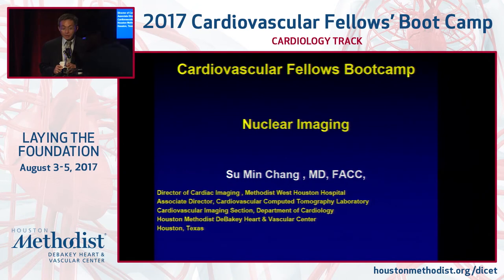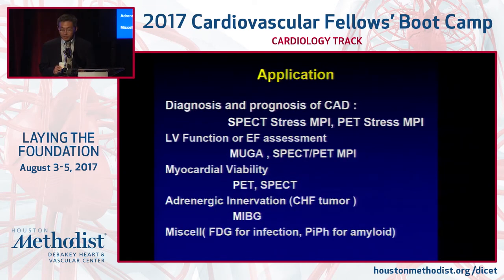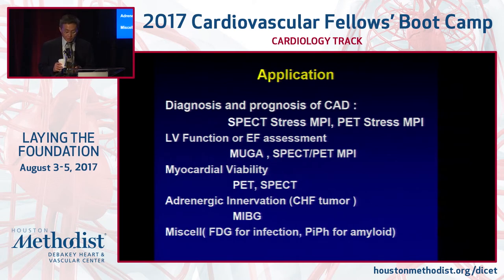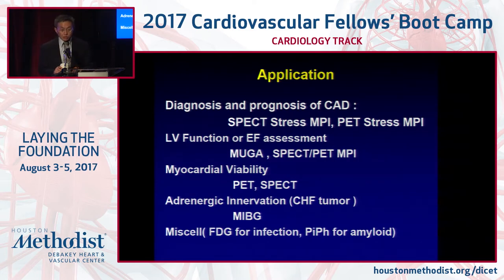Today I am going to give you a brief introduction about nuclear imaging. The main applications are assessing diagnosis and prognosis for coronary disease, SPECT myocardial perfusion imaging — that's probably 95% of what we do here at Methodist. We don't do PET, but it's commonly used in other centers. LV function assessment used to be the workhorse of nuclear medicine 30 years ago; now we rarely do it, but it's part of the information we obtain from myocardial perfusion imaging. Viability, adrenergic innervation, and pyrophosphate for amyloidosis are also strong indications, but I'm going to focus my talk on stress myocardial perfusion imaging for diagnosis of coronary disease.